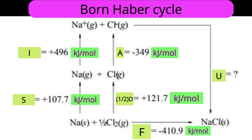Now we have Na⁺(g) and Cl⁻(g), both in isolated gaseous states, separated from each other. When brought together they arrange into a crystal lattice. Sodium chloride adopts FCC arrangement: each Na⁺ is surrounded by six Cl⁻ and each Cl⁻ by six Na⁺. Energy is liberated as the crystal forms — this liberated energy is the lattice energy U, which is what we need to determine.